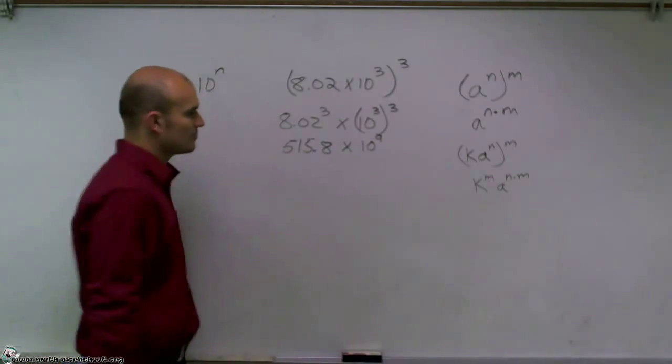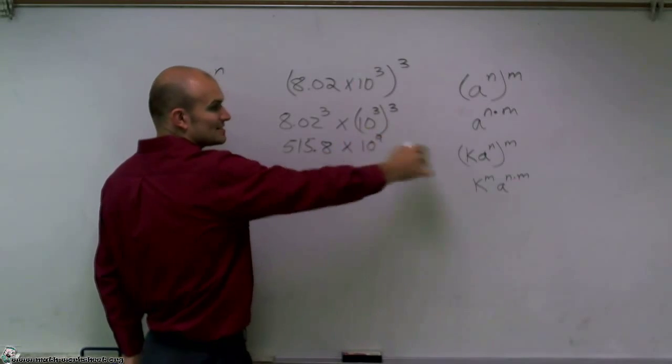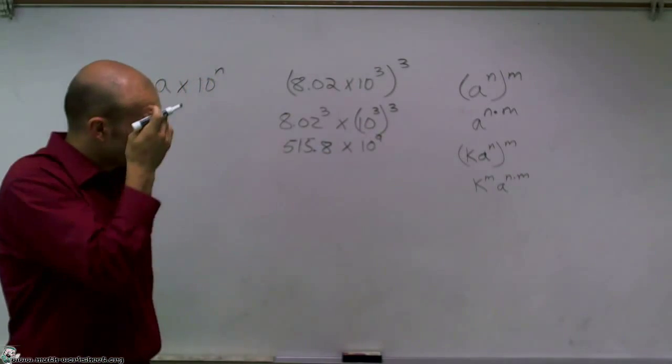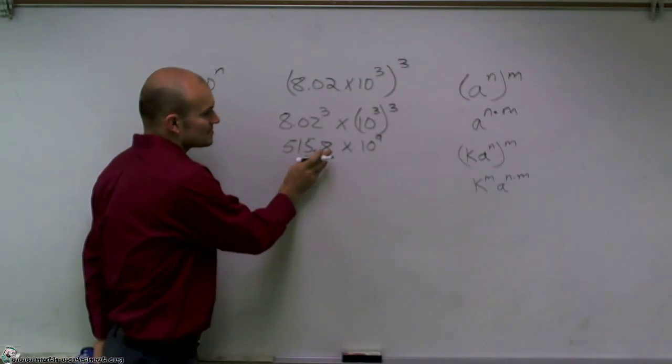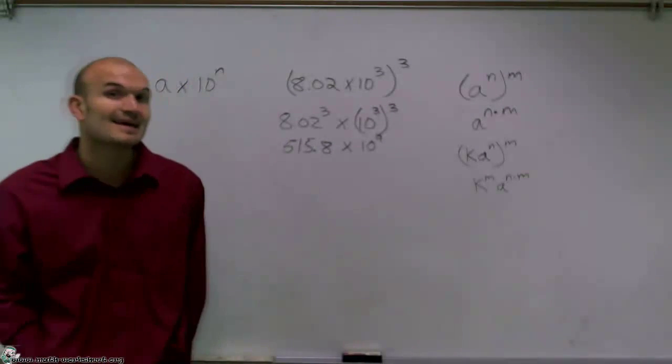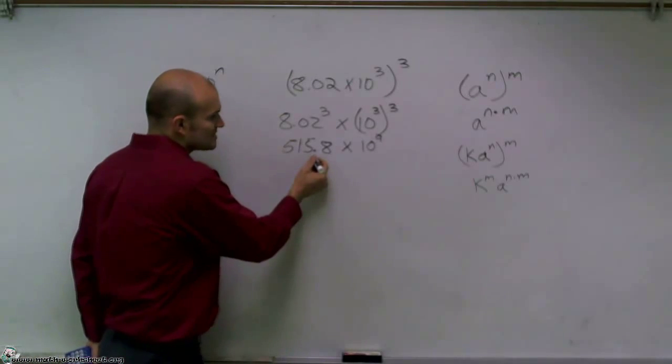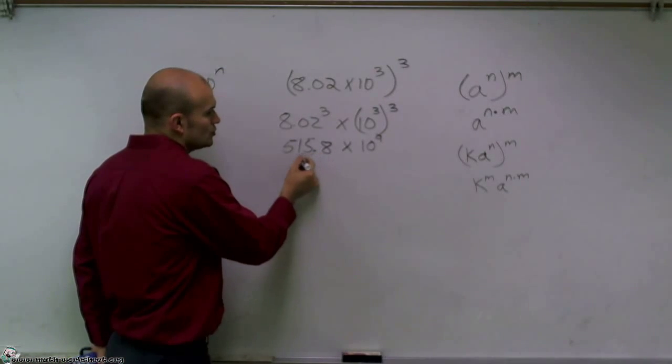Now, to finish this problem, so that means I'm going to now move my decimal point over 9 units to the right would be my answer. But our problem is this 515.8 is not between 1 and 10. So to make it between 1 and 10, I'm going to have to move this decimal point over two more units.